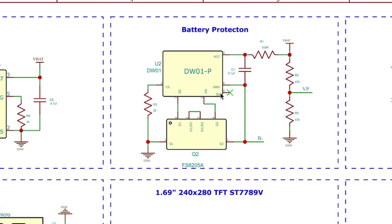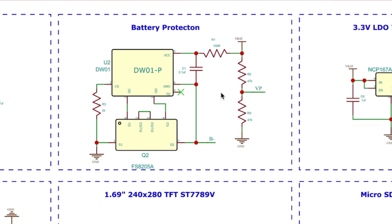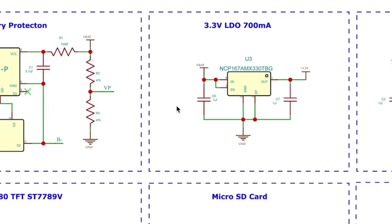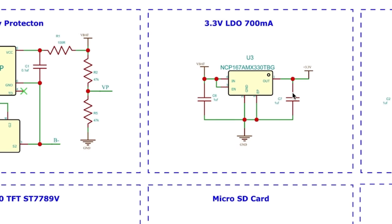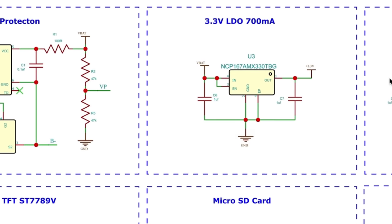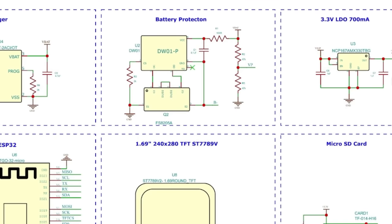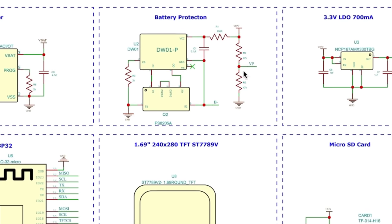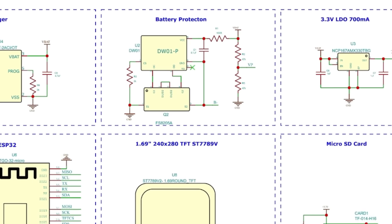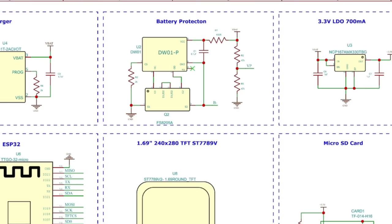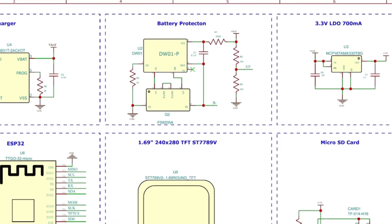Over to the right we have the 3.3 volt LDO and the 1.8 volt LDO, both of which are used to regulate voltage for our whole project. Everything works on 3.3 volts except for the heart rate sensor which needs 1.8 volts, so we have used two separate LDOs.